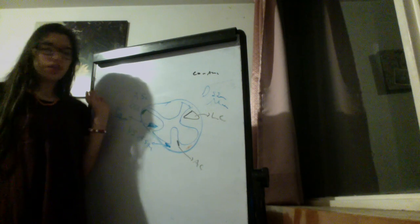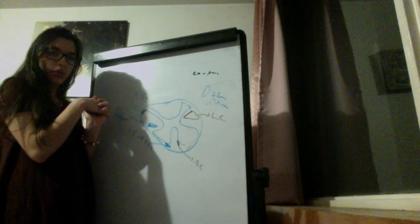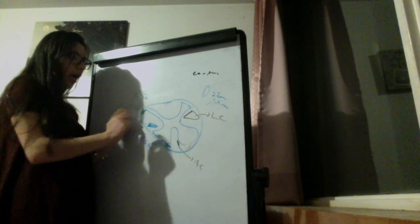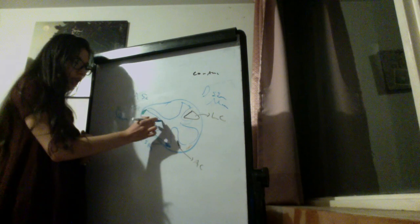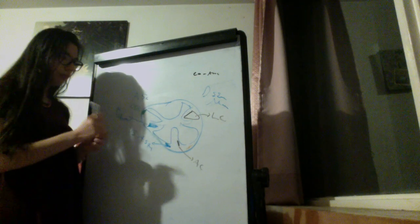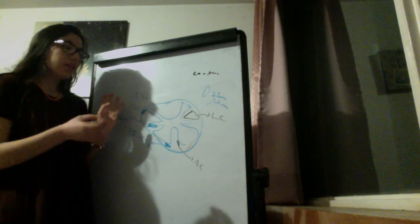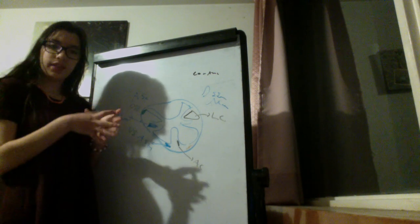This is a cross section. Here are the anterior horns, in which lower motor neurons are located, and the posterior horns. Sometimes there are also lateral horns. Now, how would we distinguish if we have a cervical, thoracic, or lumbar section, and at which level?